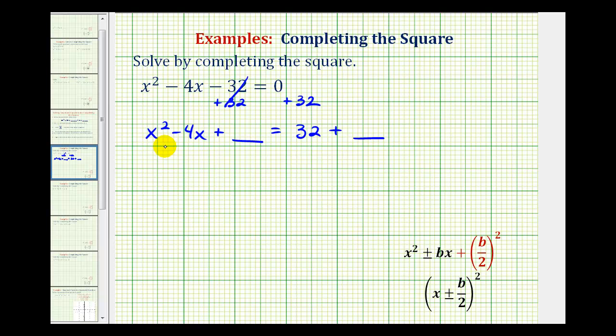And now one of the most important things to remember here is to make this a perfect square trinomial, we need to add a constant here that's equal to b divided by 2 squared, where b is the coefficient of the middle term.